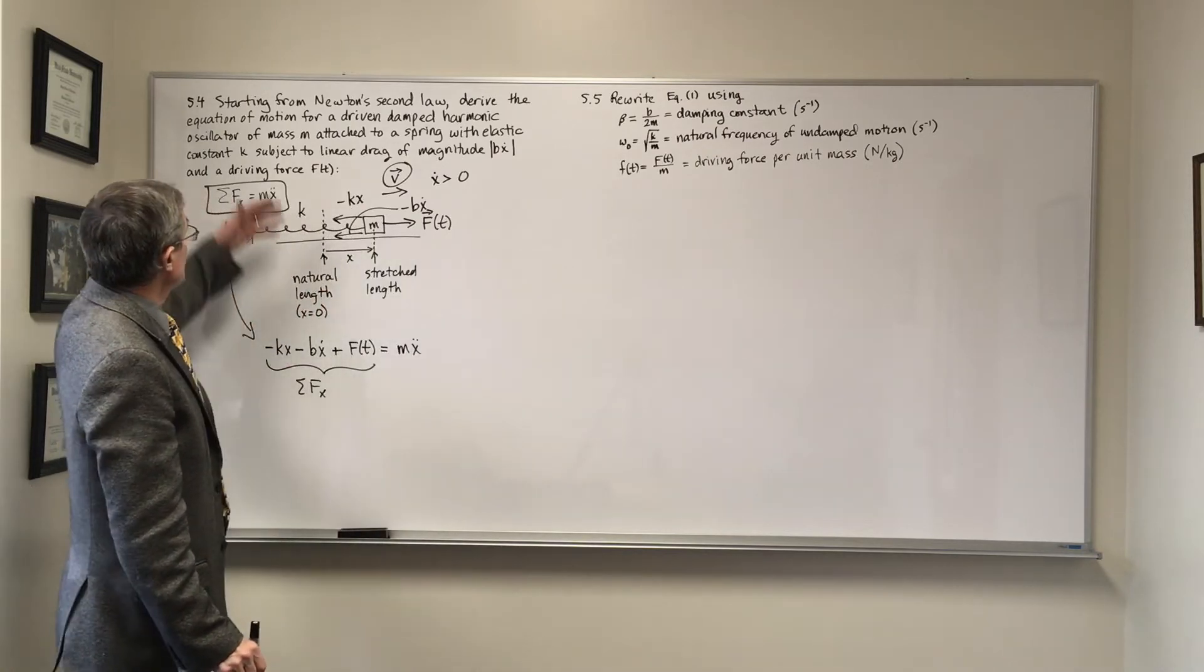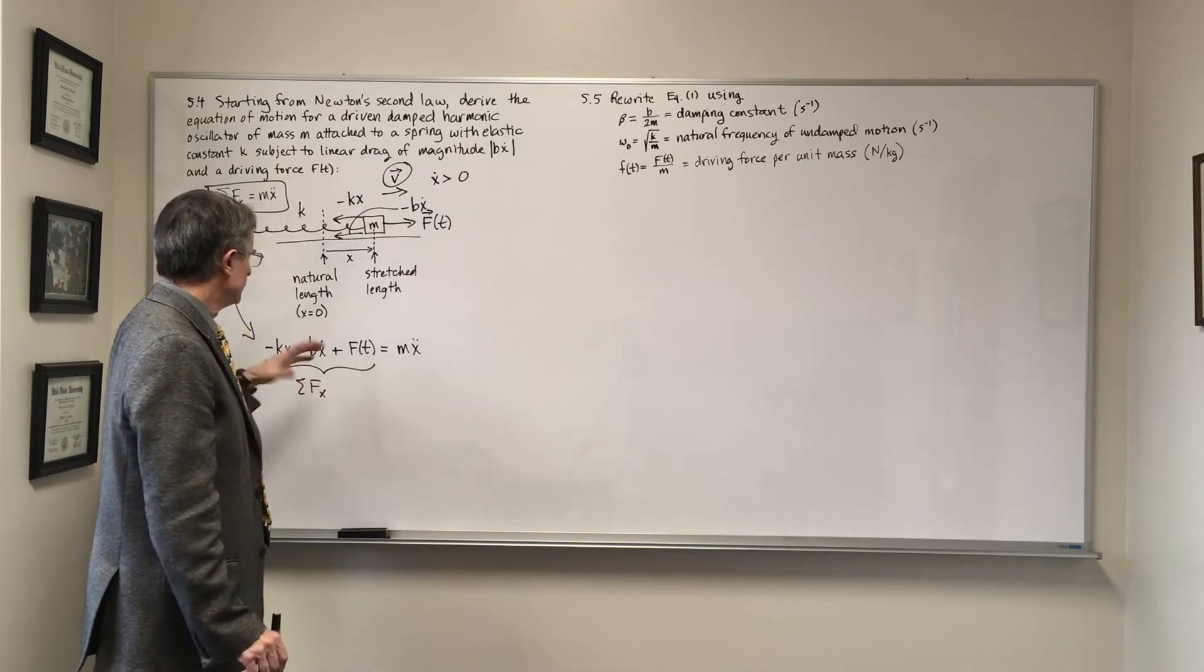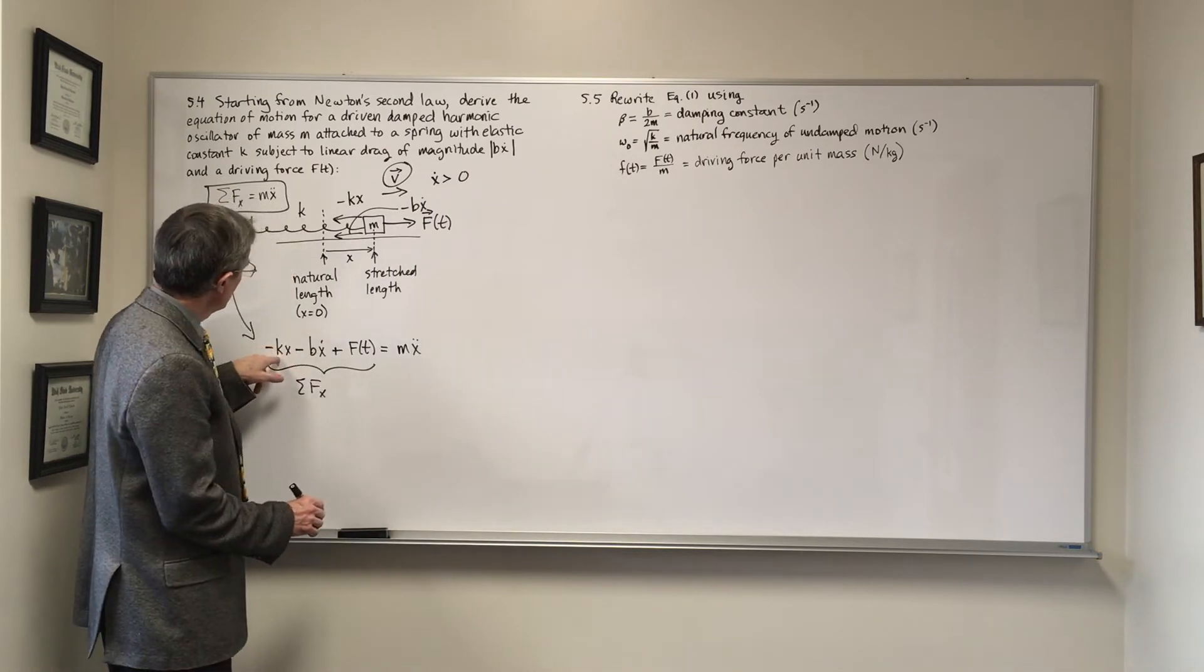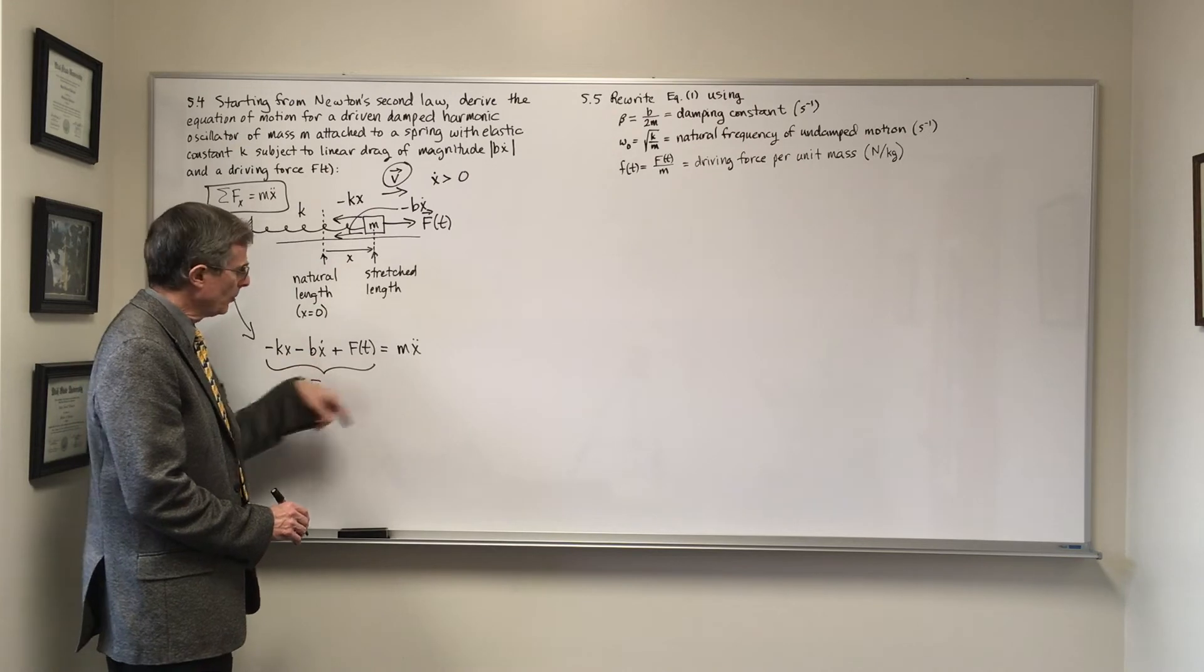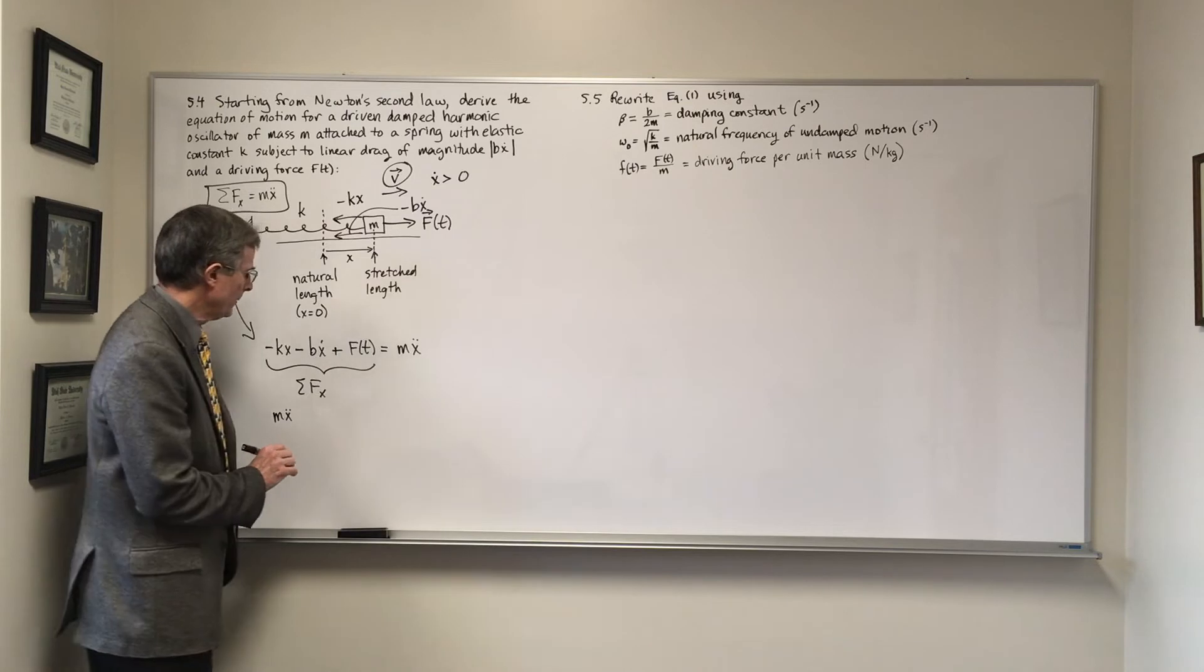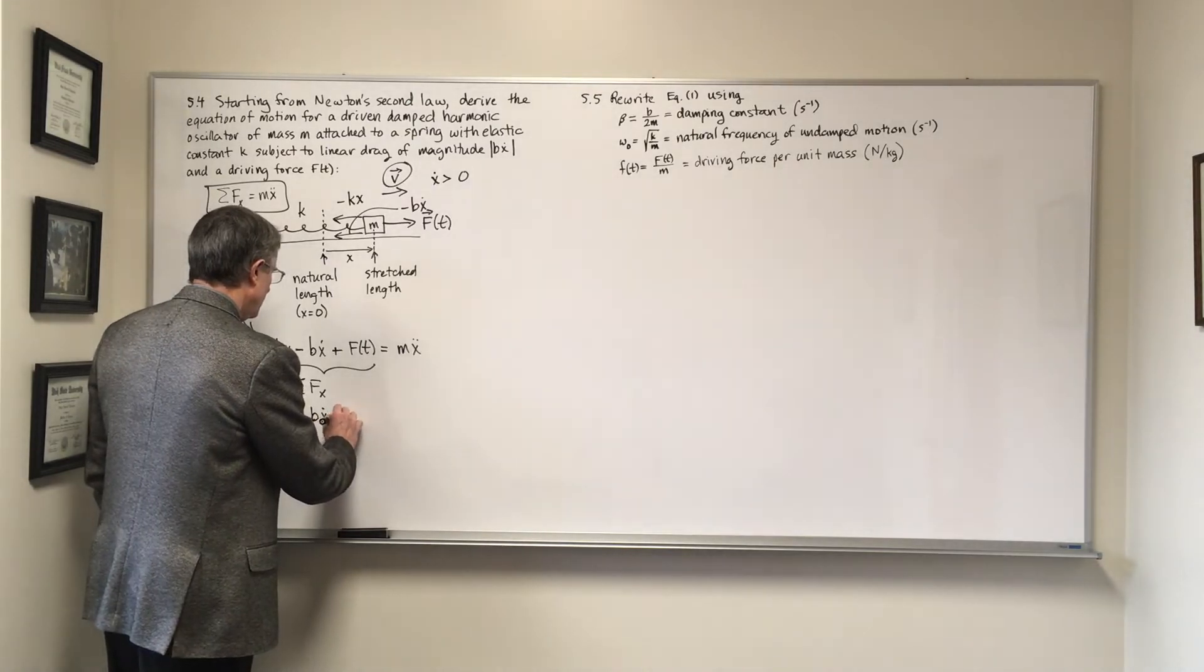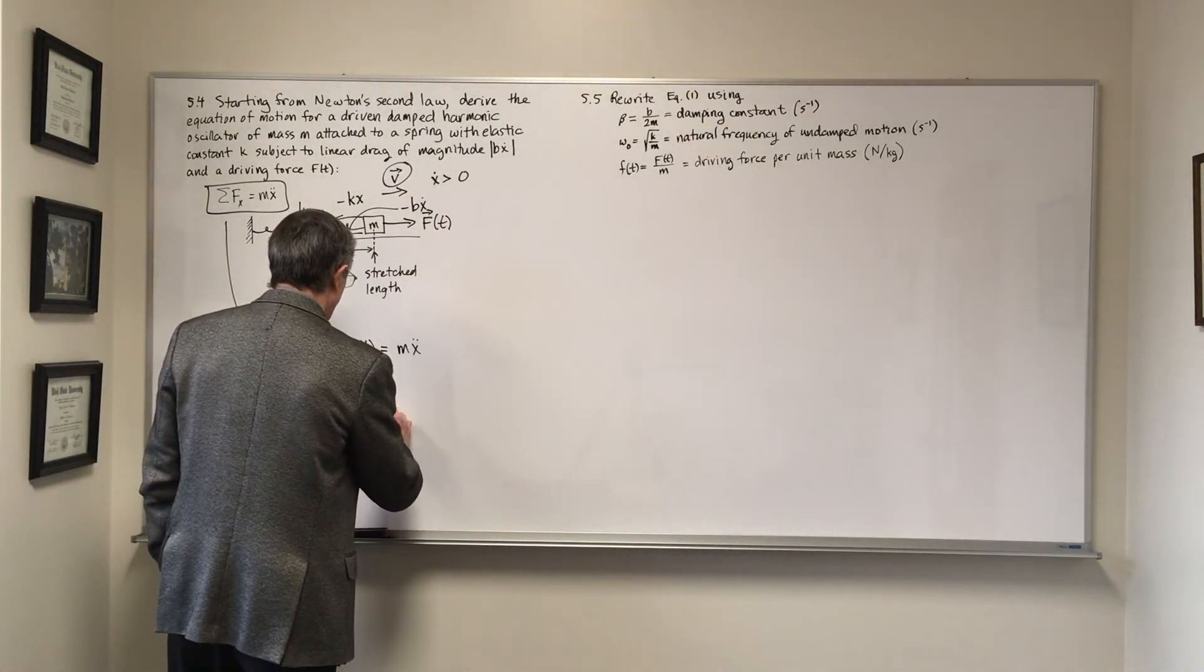And we're about done. We're supposed to find the equation of motion. That's it. We're just going to rewrite it in a little prettier way by bringing this negative KX and this negative B X dot over to the right-hand side of the equation: M X double dot plus B X dot plus KX equals F(t). And that is it for that concept.